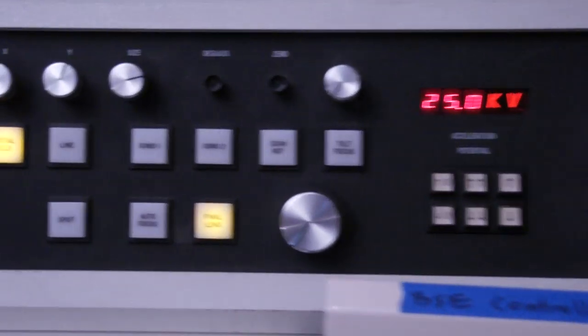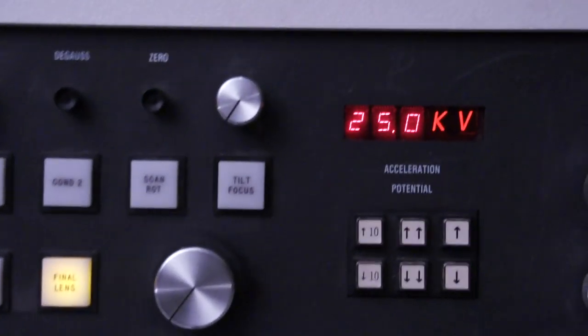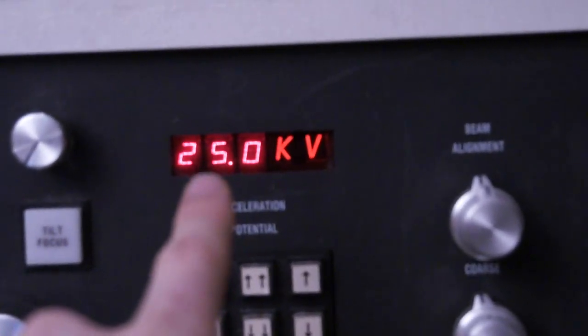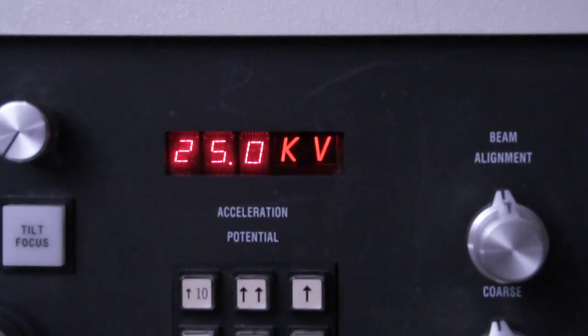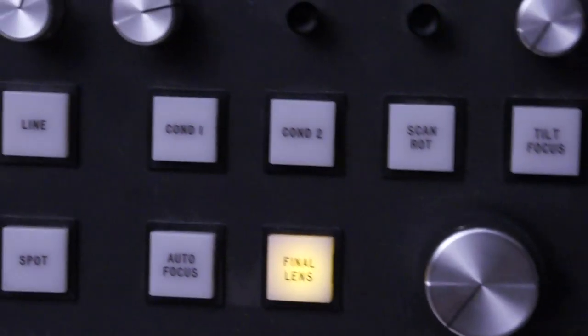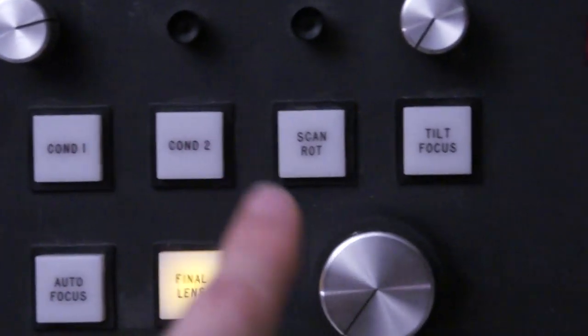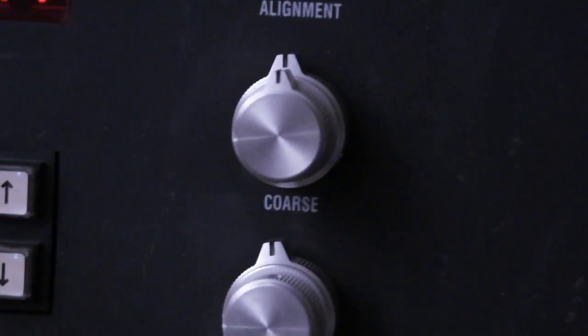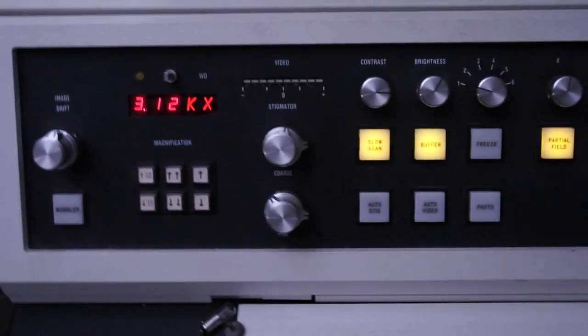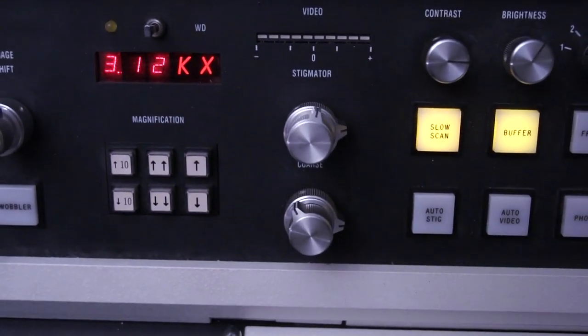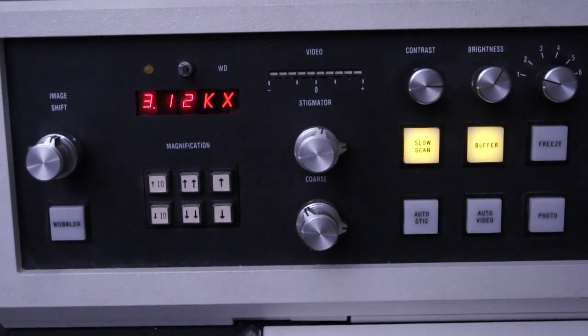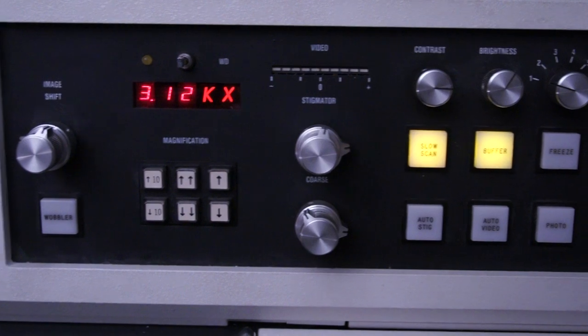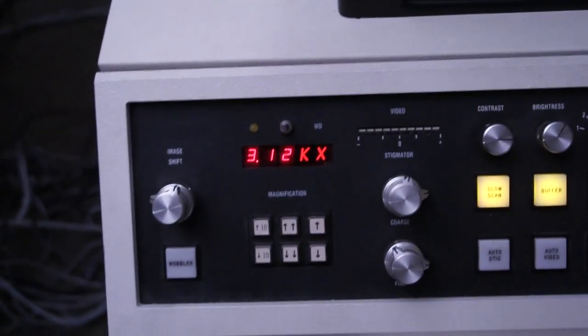This would be the point where I would start twiddling all these knobs. I'm not an expert at that yet, but I'm getting there. So the things that you play with quite a bit, there's the acceleration voltage. This is the acceleration of the electrons going down the column. Then you have final lens and condensers controlled through here. These are electrostatic lenses to help focus. You can also move the beam around a bit with beam alignment. And there's astigmatism in the beam, so you adjust that out with these knobs. And then this is adjusting your magnification.